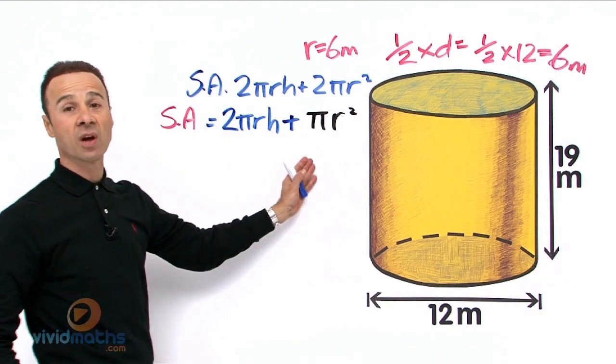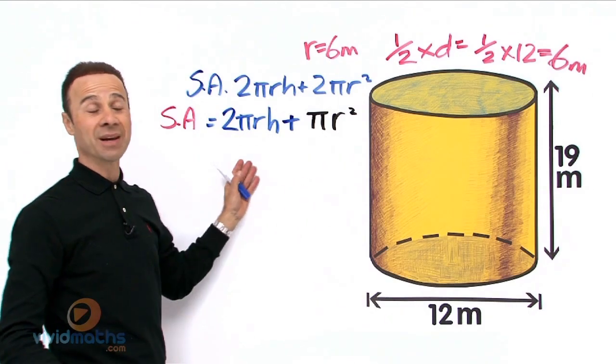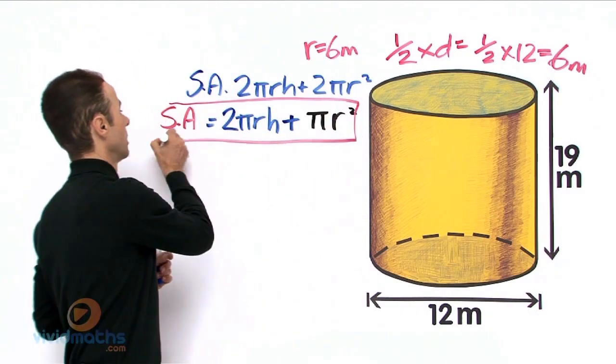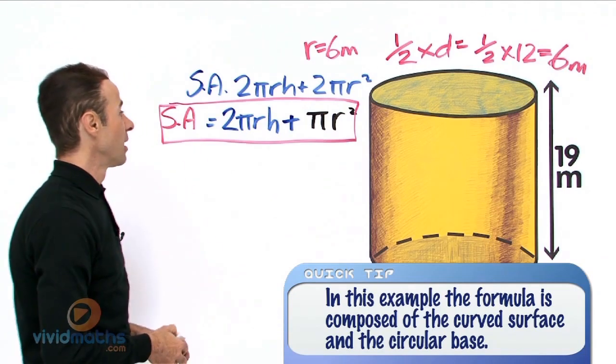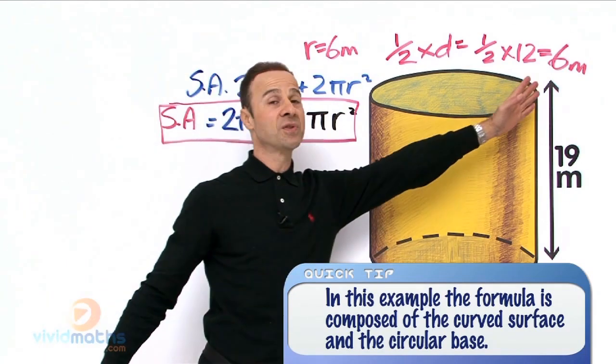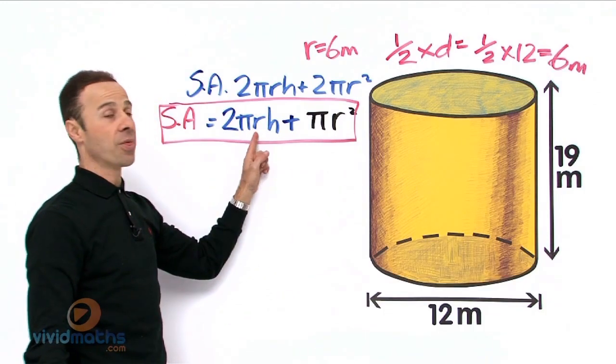There is our new surface area formula right there, and that is for an open lid. That's the one we are going to be using. So let's take the new value. We have a new value of 6 meters for radius, we are going to put it in there and there.